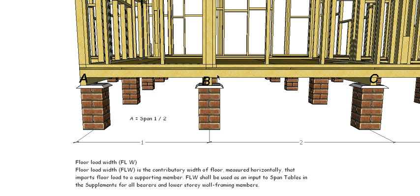Pier A — the load that Pier A is carrying is really only half the distance between Pier A and Pier B, because half of this load is being carried by Pier B. So to work out the Floor Load Width for A, it's span 1 divided by 2, and that will give us the Floor Load Width for that scenario.